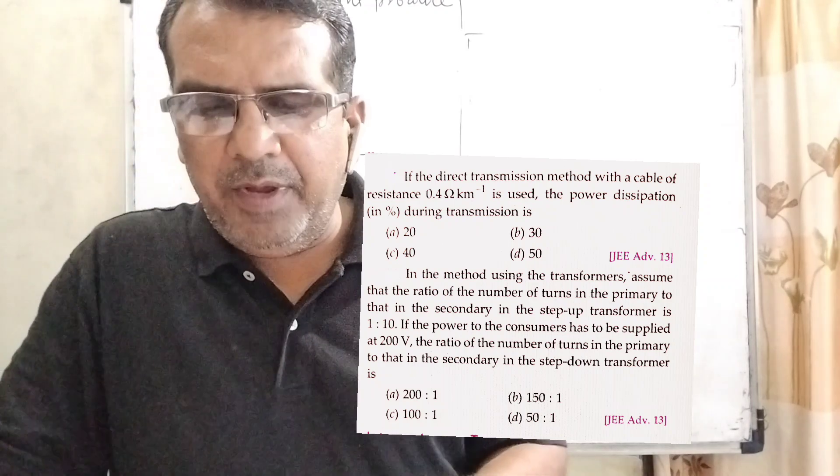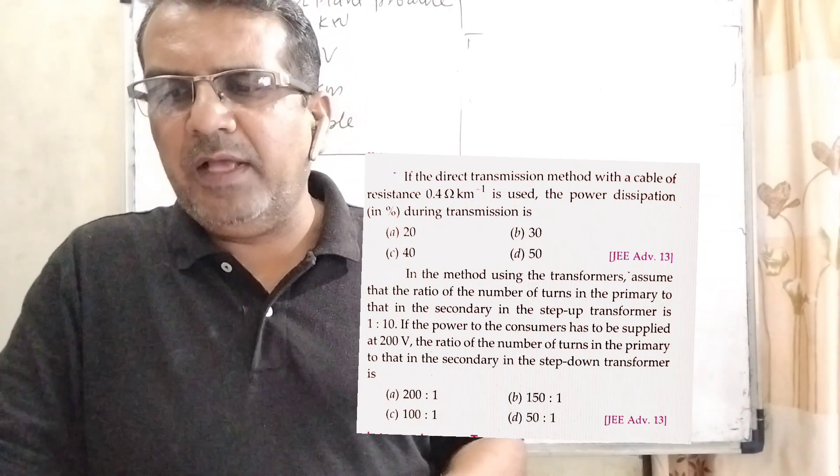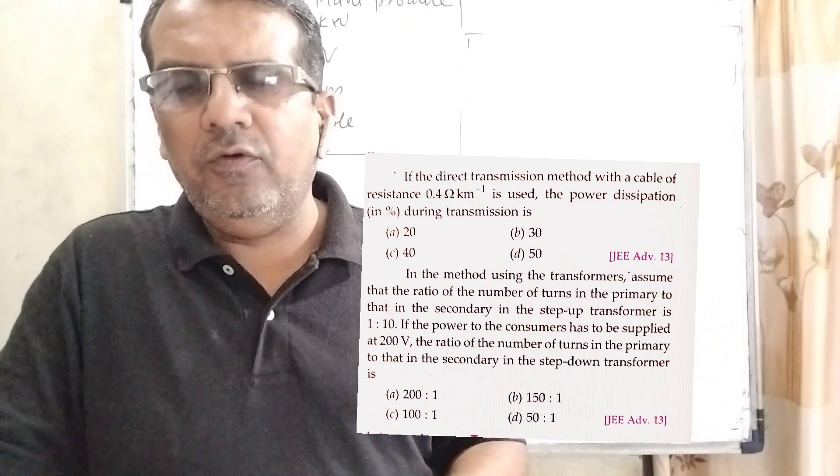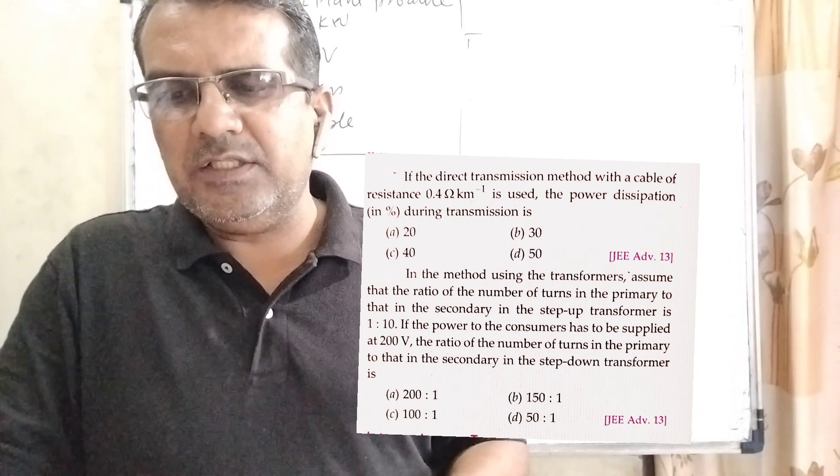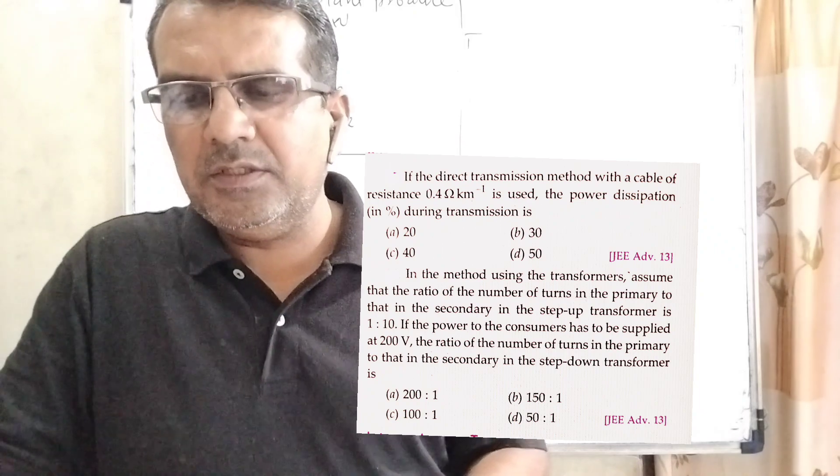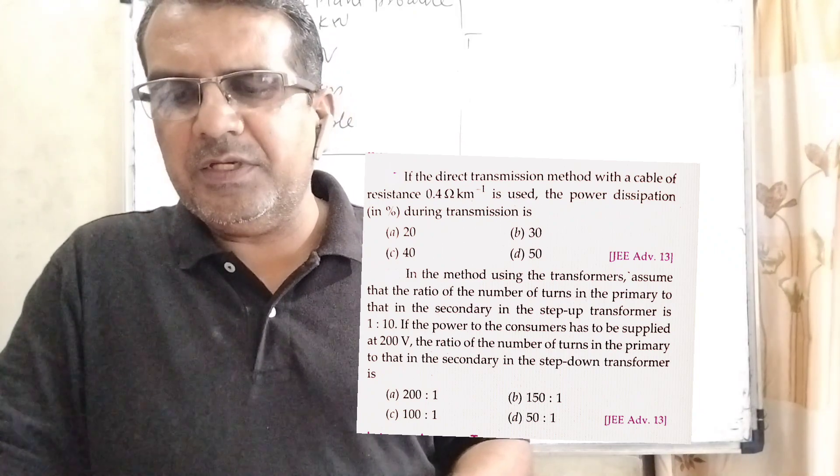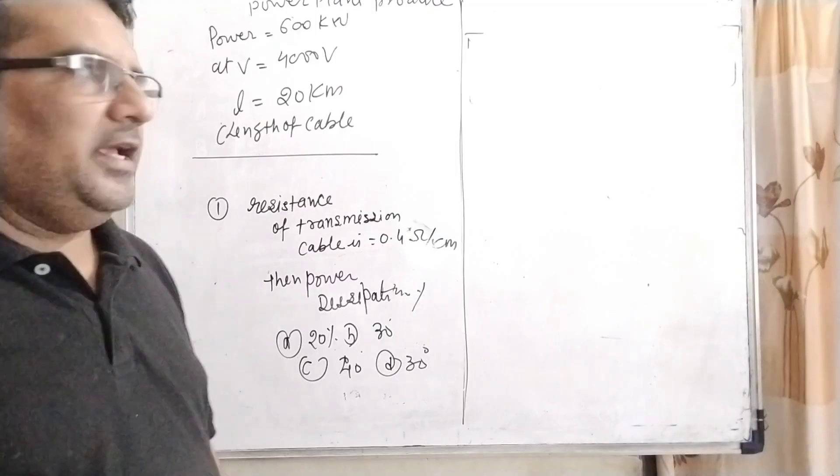Now here is the question based on this paragraph. If the direct transmission method with a cable of transmit resistance 0.4 ohm per kilometer is used, the power dissipation in percentage during transmission is: A. 20%, B. 30%, C. 40%, D. 50%.